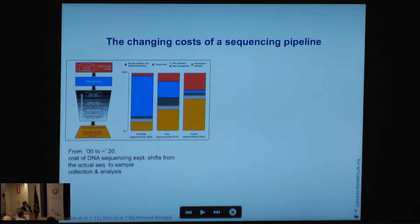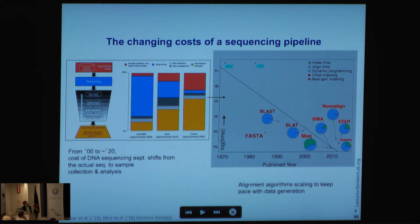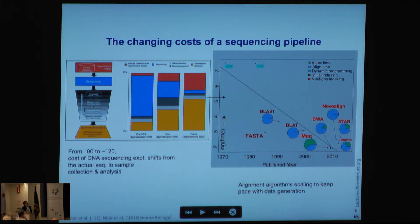I've split the downstream analysis into pipeline processing — storing data, mapping it, and doing standard pipeline operations — versus more open-ended downstream analysis. Pipeline analysis scales well with the Moore's Law increase in disk speeds and processor speeds, so proportionally you don't expect it to grow much. There's been a parallel Moore's Law development in mapping algorithms in bioinformatics, where this picture shows the speed of all these algorithms published on a log graph.